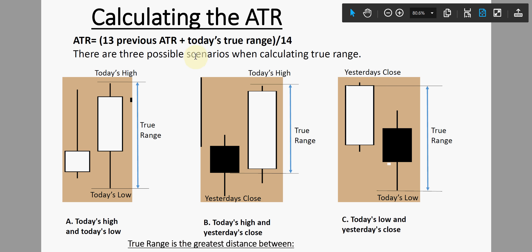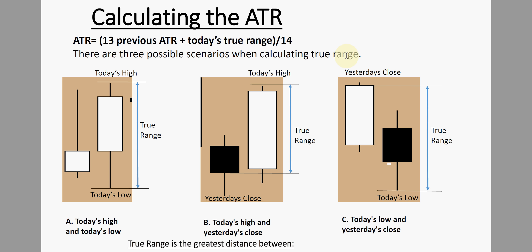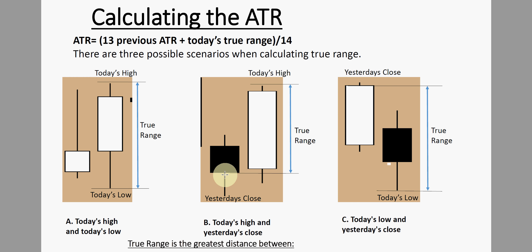There are three scenarios when calculating your true range. First, today's high minus today's low gives you the true range. Second, when there is a gap up, you take today's high minus yesterday's close. Third, when there is a gap down, you take yesterday's close minus today's low to give you the true range.